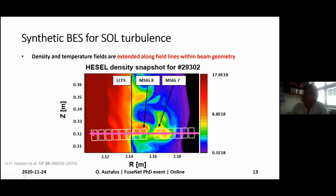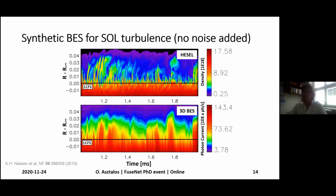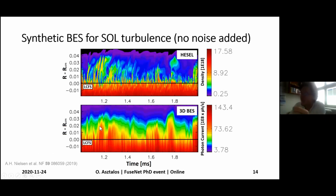Putting all of these together, here we have a two-dimensional slab of a HEASL filament propagating outward and the projection of the ASDEX observation system. The density and temperature fields from HEASL are extended along the field line within the beam geometry, to assess all of these artifacts as before mentioned. Here you can see the temporal evolution of the radial density fields — nice blobs propagating outwards — and then the smoothed-out version of the same as seen from the perspective of the diagnostic, which is smoothed out because of the before-mentioned artifacts.